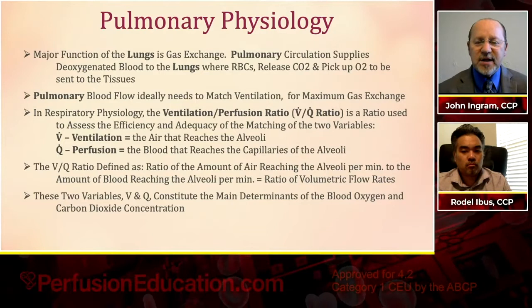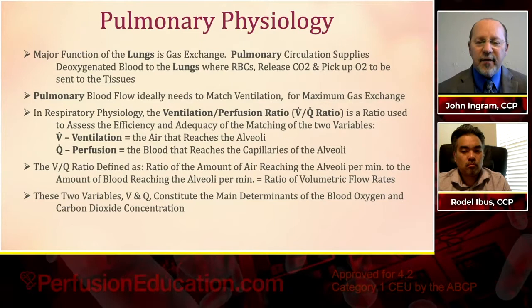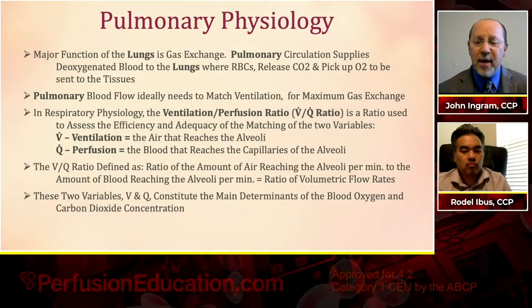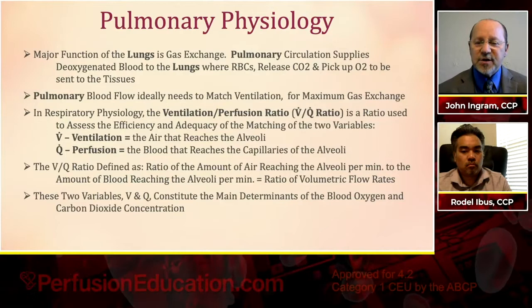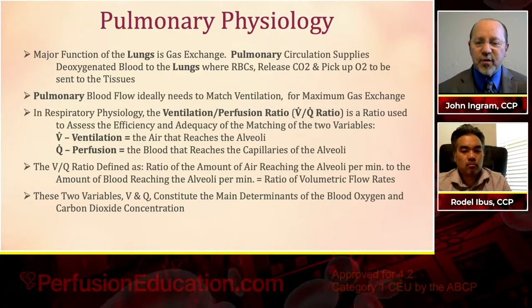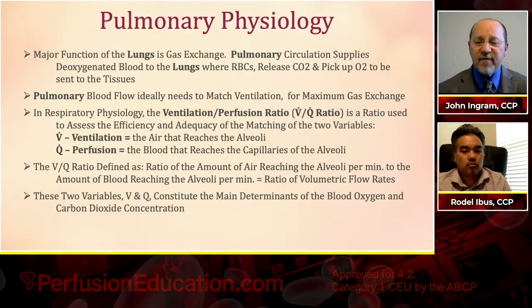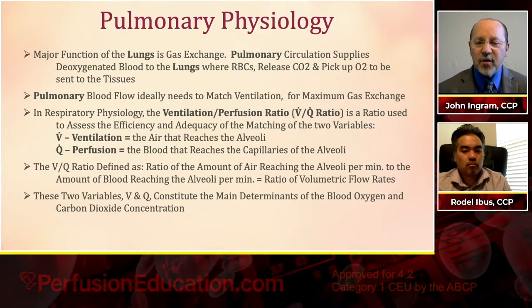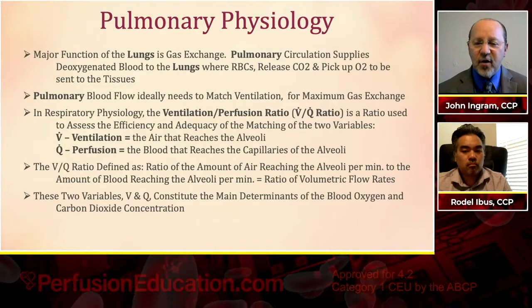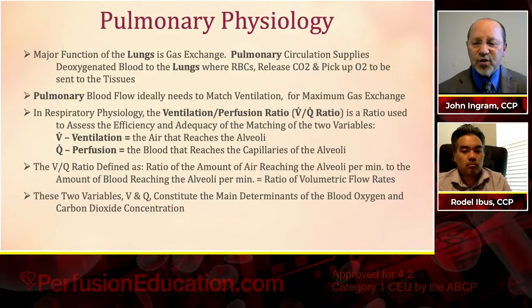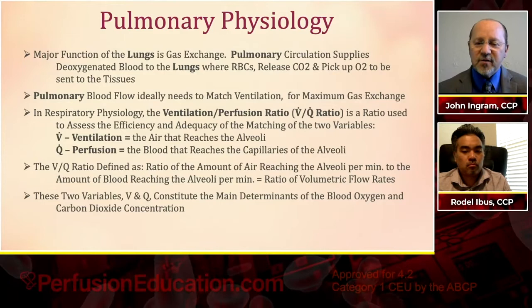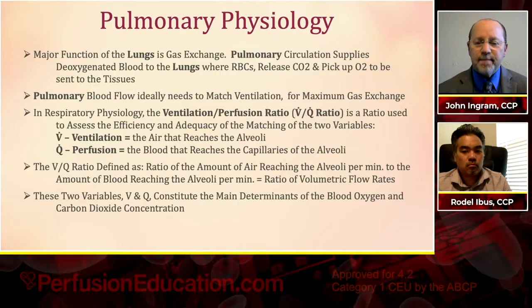The major function of the lungs is gas exchange. Pulmonary circulation supplies deoxygenated blood to the lungs, where red blood cells release carbon dioxide, pick up oxygen, and send it to our tissues. Pulmonary blood flow ideally needs to match ventilation for maximum gas exchange. In respiratory physiology, the ventilation-to-perfusion ratio — the V/Q ratio — assesses the efficiency and adequacy of matching these two variables. V is the amount of air reaching the alveoli; Q is the amount of blood reaching the capillaries of those alveoli.